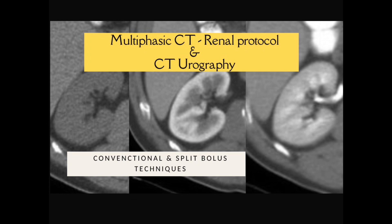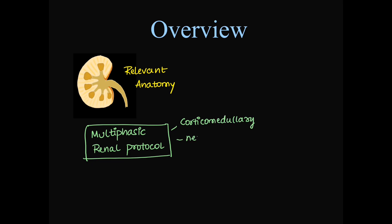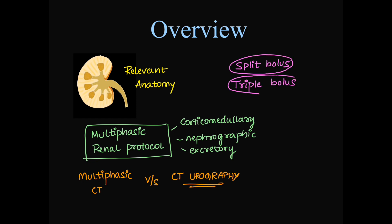We will also discuss in detail about split bolus techniques along with the regular conventional multiphasic technique. What are we going to discuss in this video? First we will see the relevant anatomy, then the conventional multiphasic renal protocol including the three phases: corticomedullary phase, their timing, nephrographic phase and excretory phases. Then we will discuss multiphasic CT versus the difference between it and CT urography. Next we will discuss split bolus and triple bolus techniques.